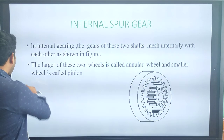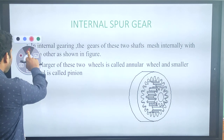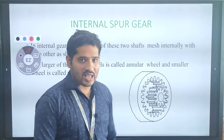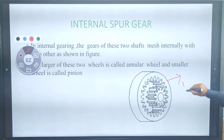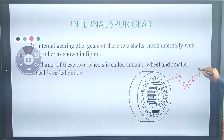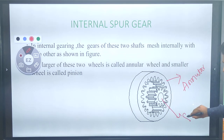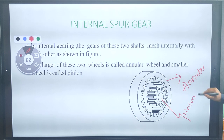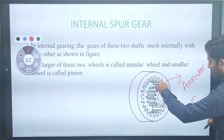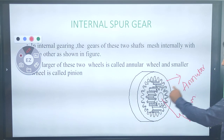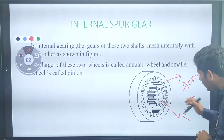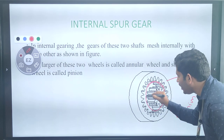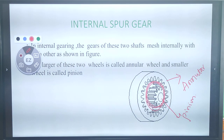In the internal spur gear, the teeth mesh internally. The bigger gear we call the annular, and the smallest gear we call the pinion. The annular and the pinion mesh internally — such a type of gear we call an internal spur gear.